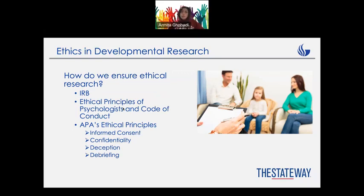The second is confidentiality, in which everything should be anonymous and we have to store every piece of information in safe places with passwords. For example, if we record them, we have to make sure their pictures or videos are safe and only the research team can access that information. Their demographics — for example, parents' age, financial level, education — everything should be protected.